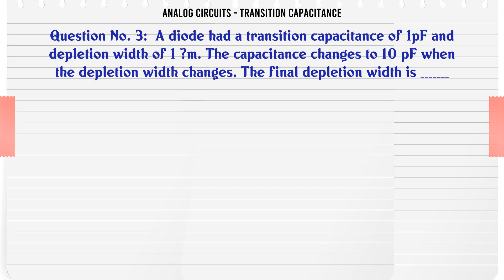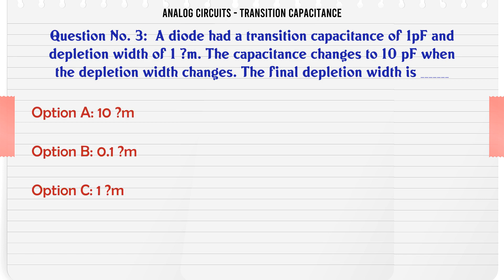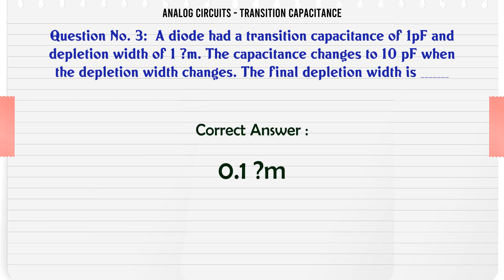A diode had a transition capacitance of 1 PF and depletion width of 1 μm. The capacitance changes to 10 PF when the depletion width changes. The final depletion width is: A: 10 μm, B: 0.1 μm, C: 1 μm, D: 100 μm. The correct answer is 0.1 μm.